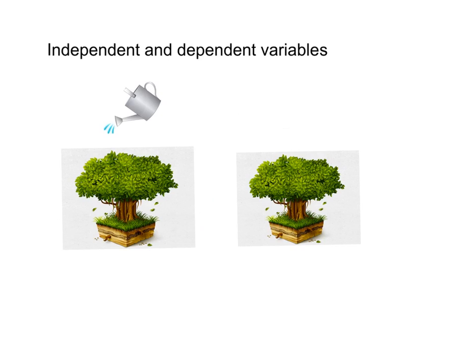So our control would be just regular water. And we want to see if sugar water is going to make sweeter and bigger apples. So we will say that tree A is going to be regular water, and tree B is going to be this sugar water.